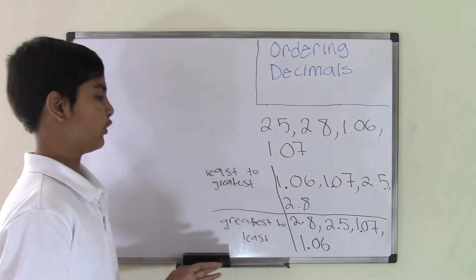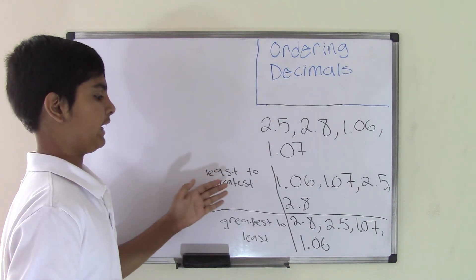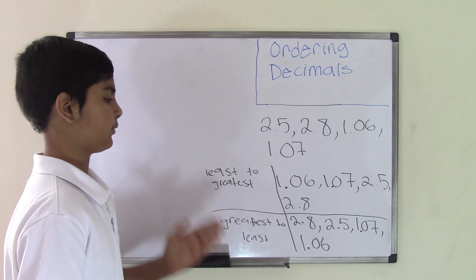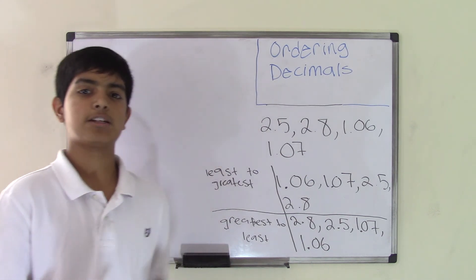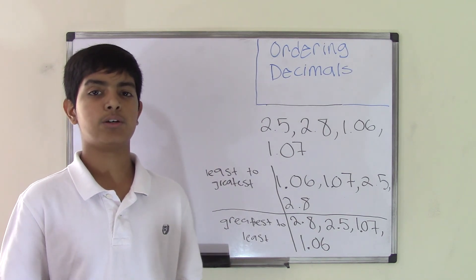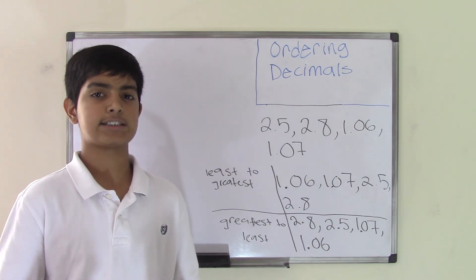So what I just did was take this set of decimal numbers and order them first from least to greatest and then from greatest to least. This is how you order a set of decimal numbers. I hope you enjoyed this video and got what you needed to know. We'll see you guys next time. Bye.